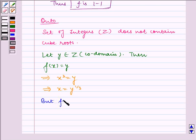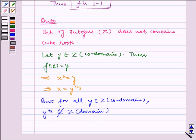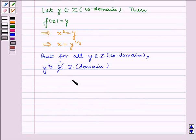But, for all y belongs to Z in codomain, y to the power 1 by 3 does not belong to Z in domain. Hence, f is not onto.